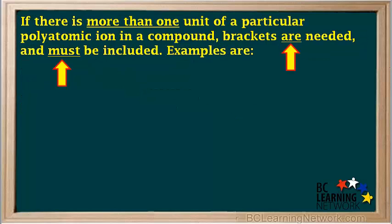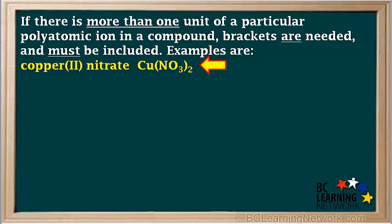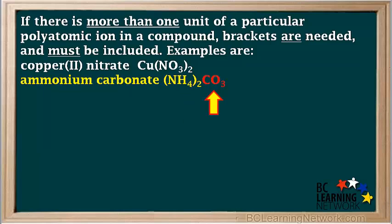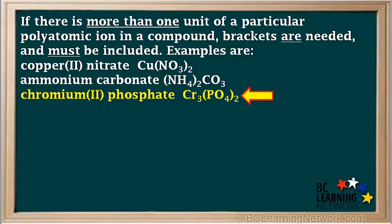If there is more than one unit of a particular polyatomic ion in a compound, brackets are needed and must be included. For example, copper(II) nitrate, Cu(NO3)2, has one copper atom and two nitrate ions — since there are two nitrates, brackets are placed around the nitrate. Ammonium carbonate, (NH4)2CO3, has two ammonium ions and one carbonate ion, so the ammonium is in brackets but carbonate is not. Chromium(II) phosphate, Cr3(PO4)2, has three chromium atoms and two phosphate ions. Brackets are never used for single atoms, so no brackets around Cr, but two phosphate ions means brackets must be added around PO4.